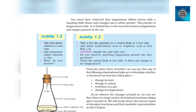From the above three activities, we can say that any of the following observations helps us to determine whether a chemical reaction has taken place: change in state, change in color, evolution of a gas, change in temperature. As we observe the changes around us, we can see that there is a large variety of chemical reactions taking place around us. We will study about the various types of chemical reactions and their symbolic representation in this chapter.